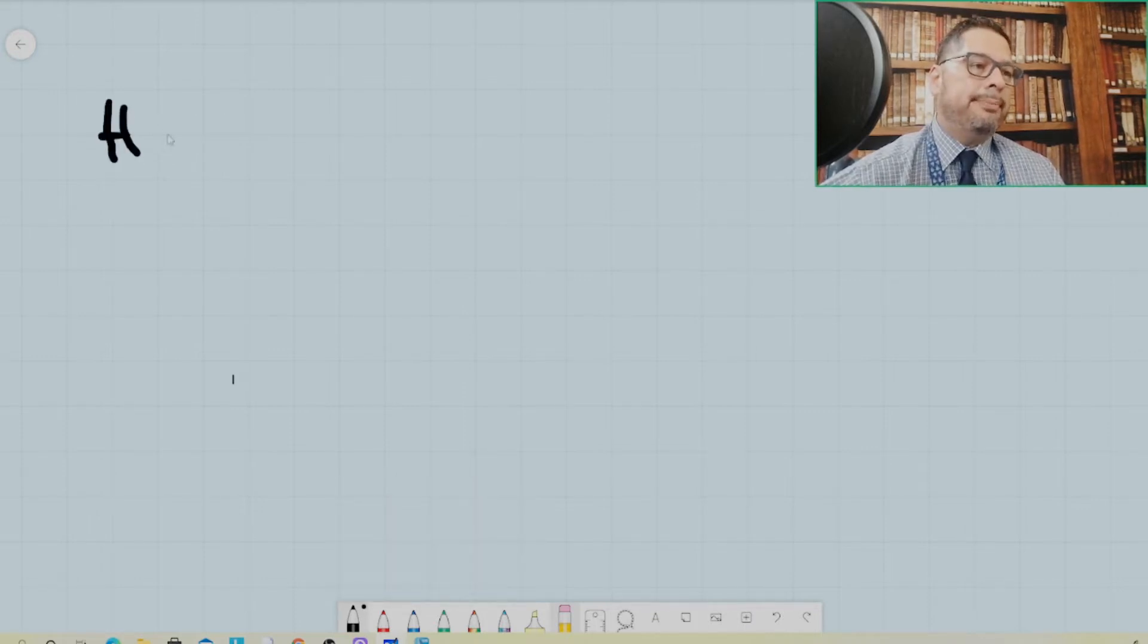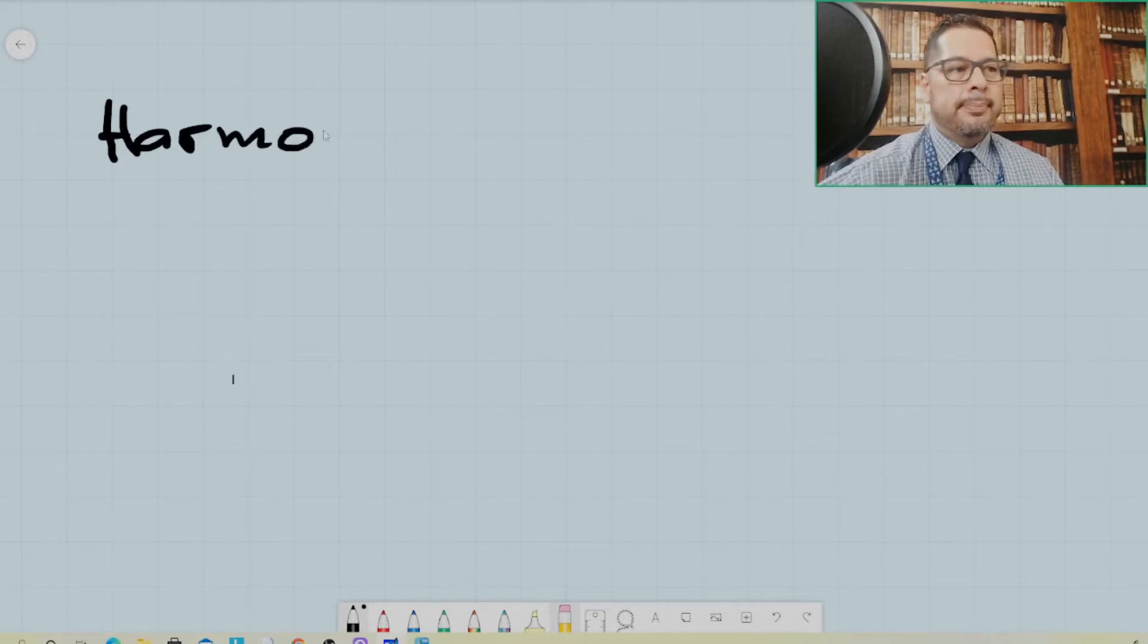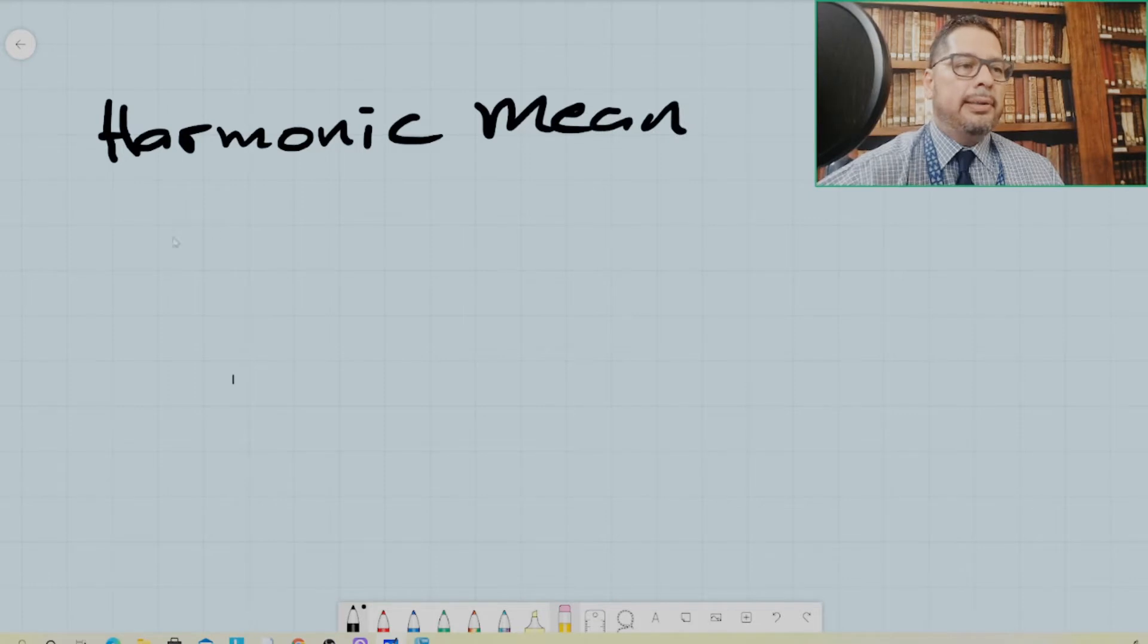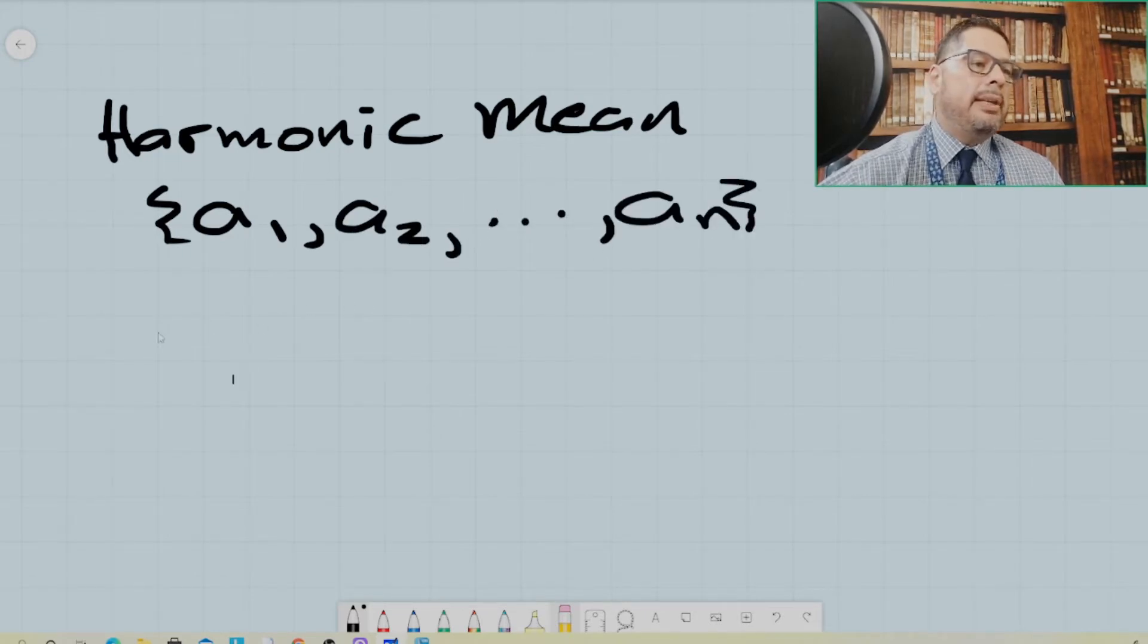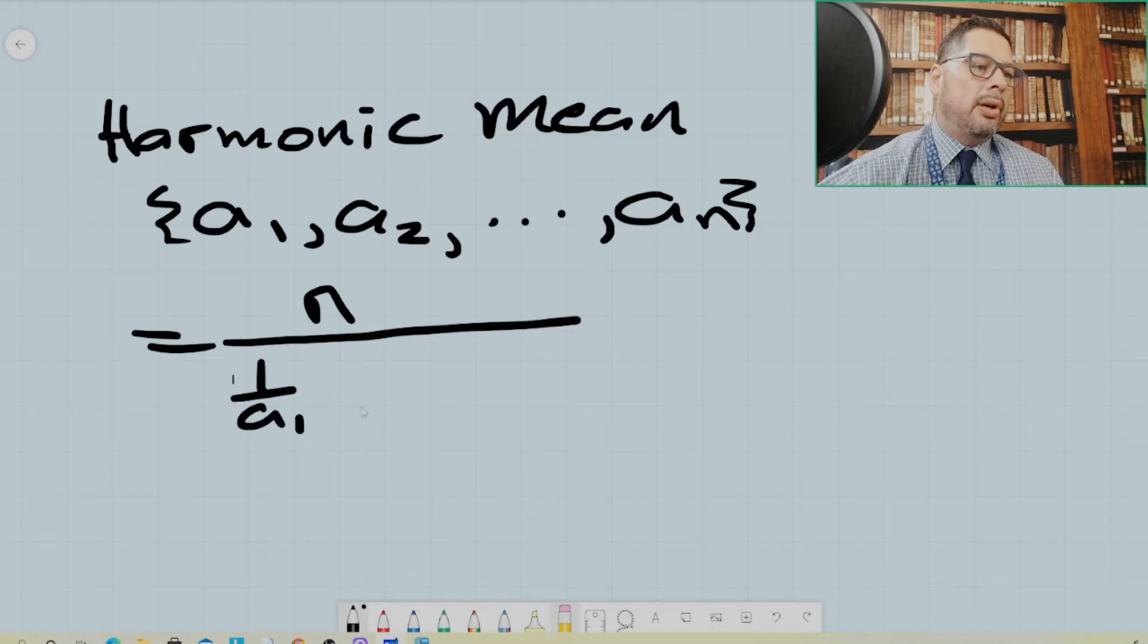The harmonic mean is defined, if you have a set of n numbers, say a₁, a₂, dot dot dot, all the way to aₙ, then the harmonic mean is defined as n divided by the sum of the reciprocals of your set of n numbers.